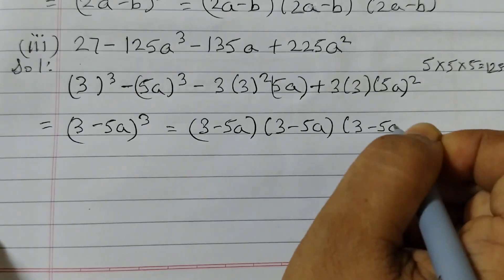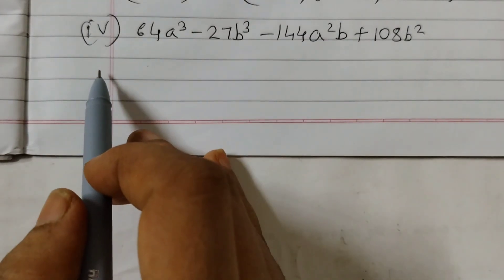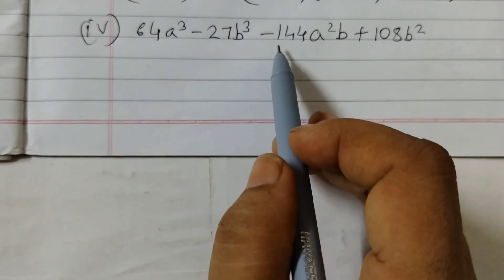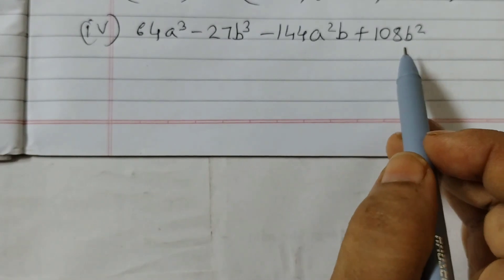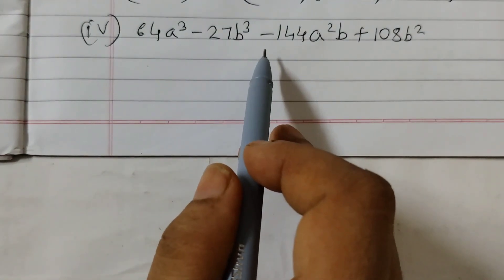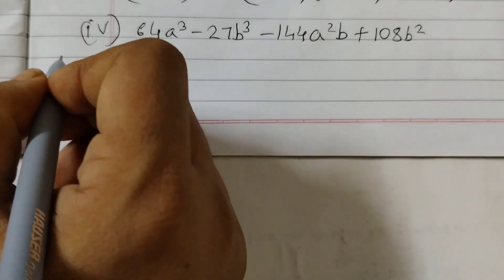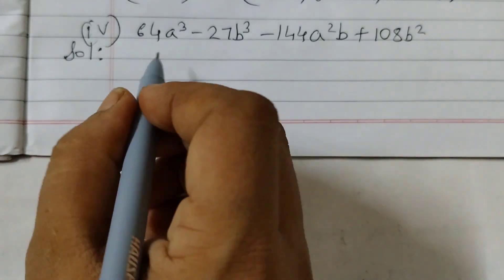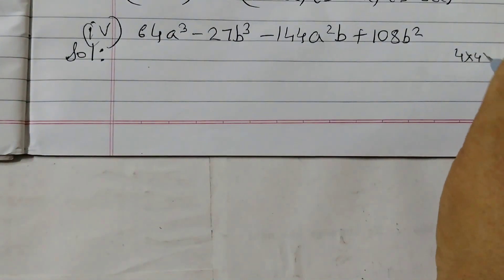Question number 4: 64a³ minus 27b³ minus 144a²b plus 108b². We see two minus signs, so we use the (a - b)³ identity. Write the identity first and then solve. 64 = 4×4×4, so 64a³ = (4a)³.